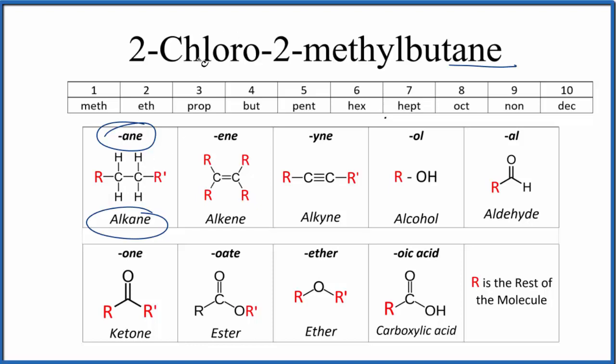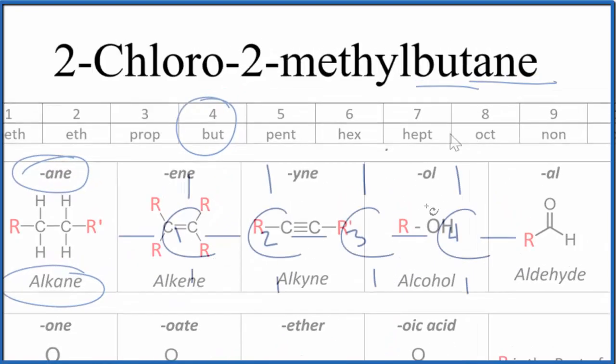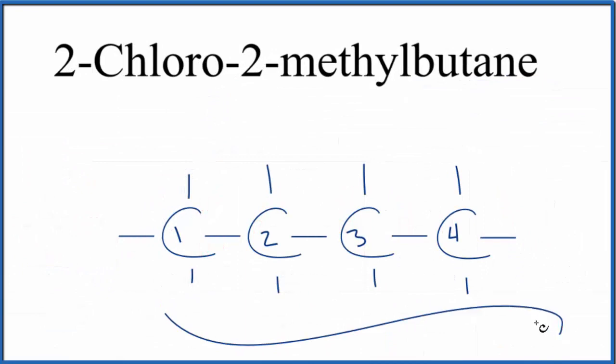We'll also have the chloro group here as well. So the but, that means we'll have four carbons. So let's put a chain of four carbons single bonded up. So right now we have butane.